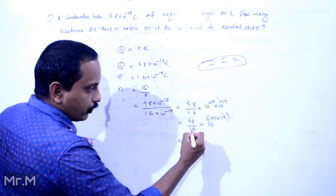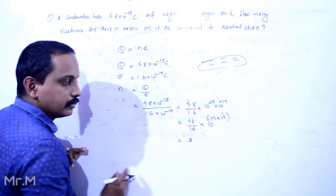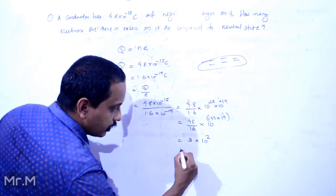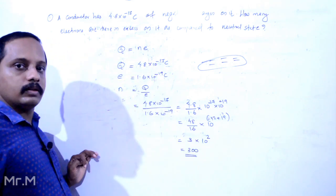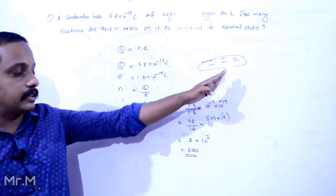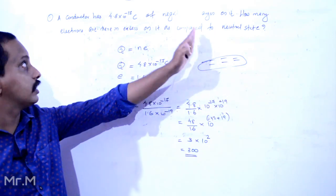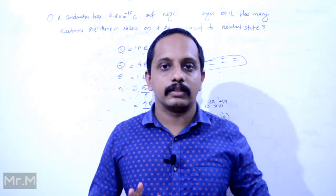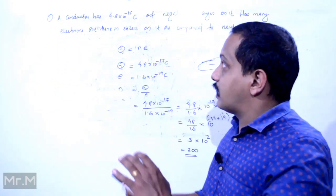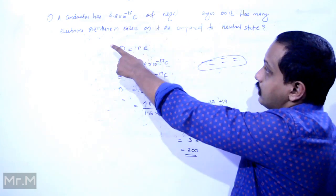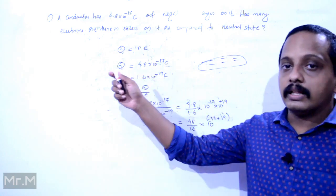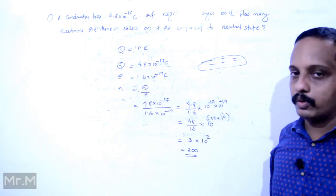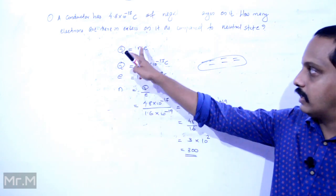So 4.8 divided by 1.6 gives 3, and 10 raised to minus 17 divided by 10 raised to minus 19 gives 10 raised to 2, which is 300. Therefore n is equal to 300 electrons. Q is equal to n times e, so with Q equal to 4.8 into 10 raised to minus 17 and e equal to 1.6 into 10 raised to minus 19, n equals 300.